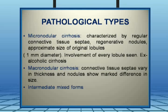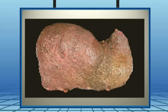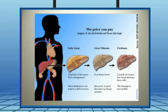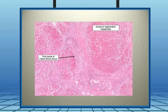Macronodular cirrhosis has connective tissue septa that vary in thickness and nodules that show marked differences in size. We also have intermediate mixed forms of both. The gross specimen shown is a large liver, absolutely not healthy pink — it has extensive nodularity in both lobes. The slide heading warns about the price of alcohol consumption. The sequence of damage in alcoholic liver disease is fatty liver, then liver fibrosis — still reversible if the patient stops drinking — and then end-stage cirrhosis. The histopathological specimen clearly shows both fibrosis and regenerating nodules.